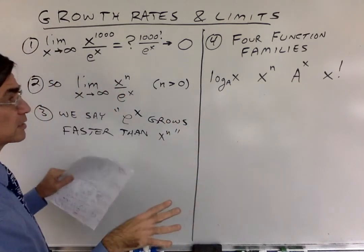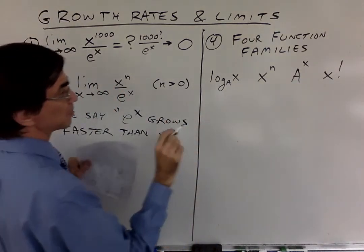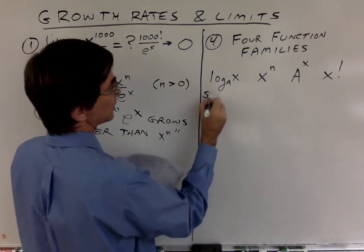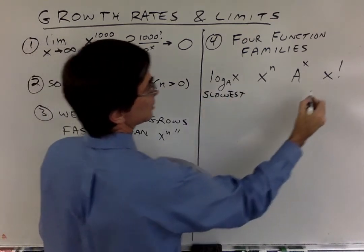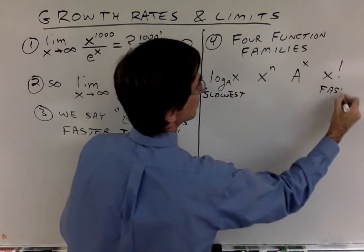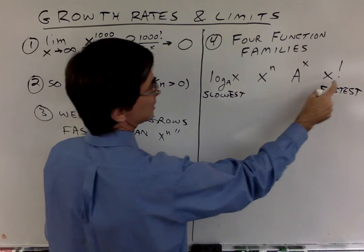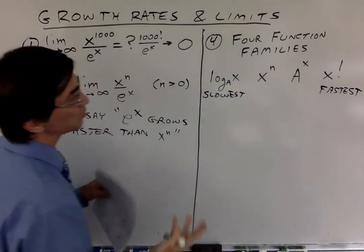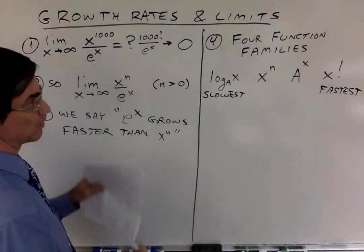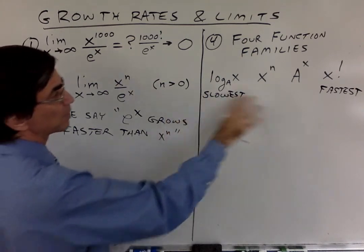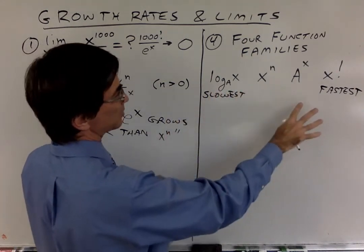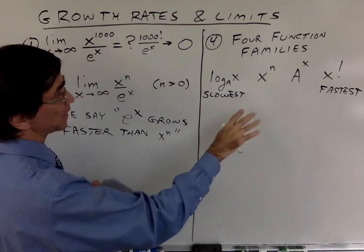You're allowed to just memorize this. You don't have to prove it. Log x is the slowest growing function, and a to the x is the fastest. They go in this order: slowest, medium slow, medium fast, fastest. We can prove it by looking at sequential derivatives, but you don't have to prove it. You just have to remember the order, and it will come to you pretty naturally.